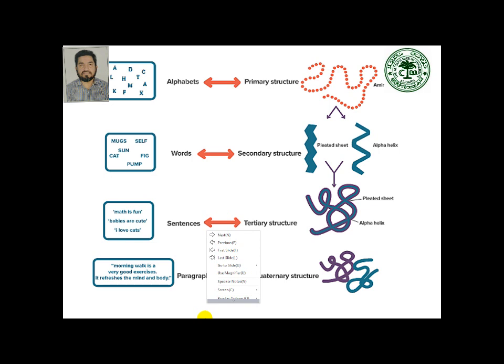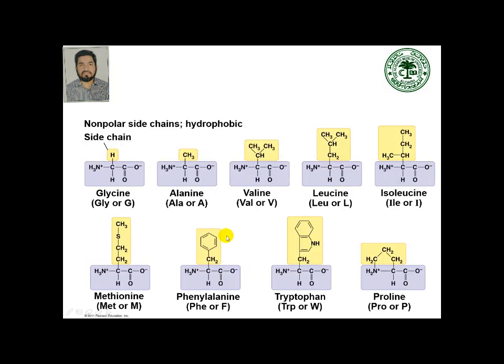English has 26 alphabets; here we have 20 amino acids, coded by 61 genetic codons with three nonsense codons. These amino acids are classified on the basis of the nature of the side chain group. For instance, if it has a hydrophobic side chain, examples include glycine, alanine, valine, leucine, isoleucine, methionine, phenylalanine, tryptophan, and proline.